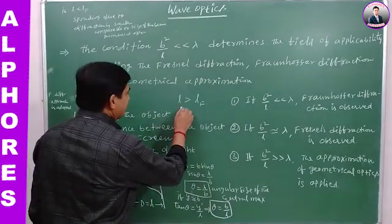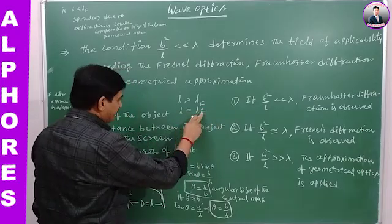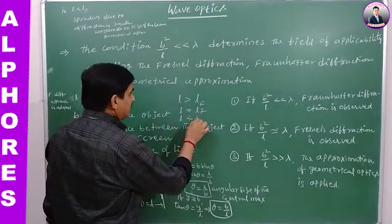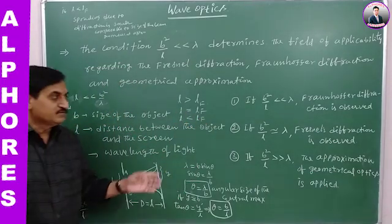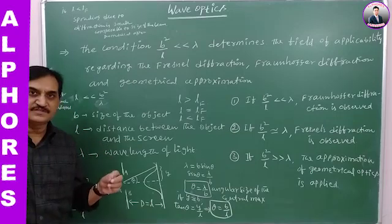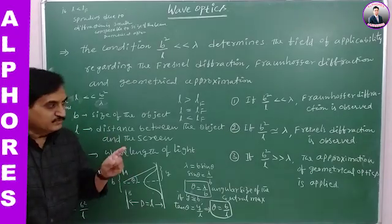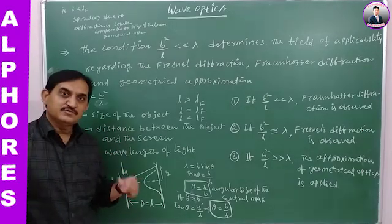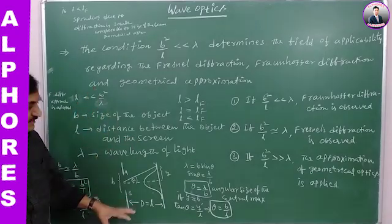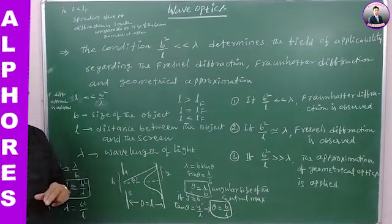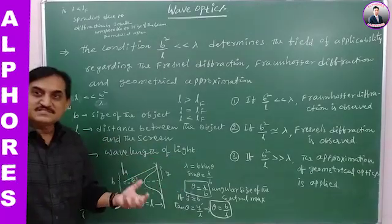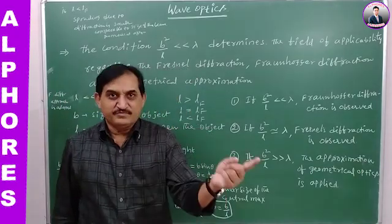There are three cases: when L equals Fresnel distance, Fresnel diffraction occurs and spreading of light on the screen is comparable to the size of the beam. When L is less than Fresnel length, the spreading of light on the screen is smaller than the size of the beam — therefore geometrical optics is applied to discuss phenomena related to light, and the wave nature of light is ignored. These three conditions are based on the distance of the screen. Indirectly, we are comparing the size of the object or slit with the wavelength of light used.